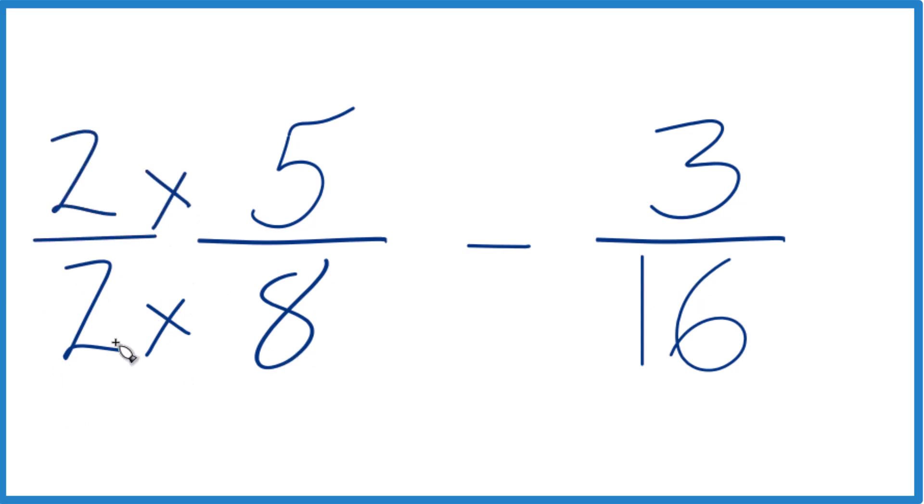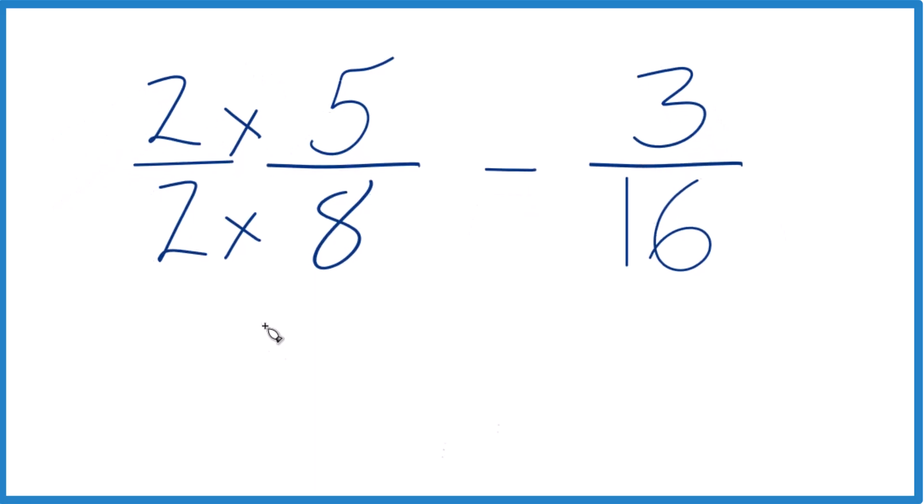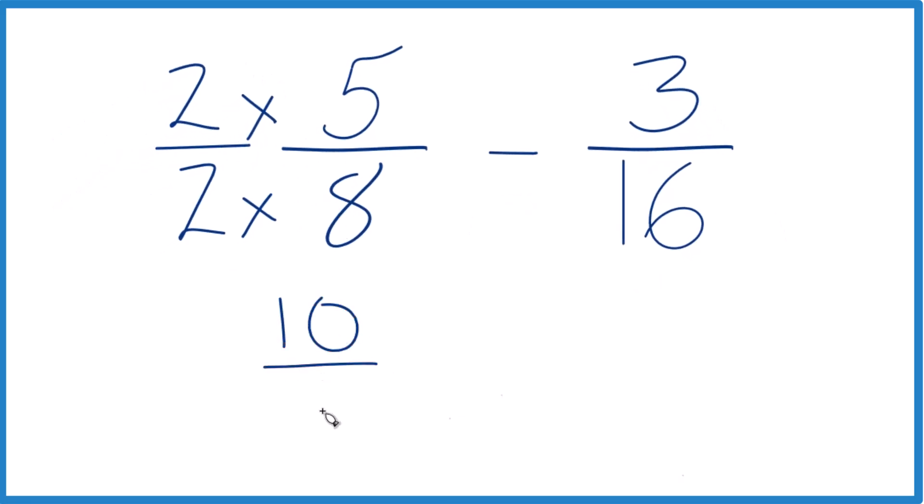Because 2 over 2, that's 1. So 1 times 5 eighths, it's still 5 eighths. But now we have 2 times 5, that gives us 10. 2 times 8 gives us 16. So now we have that 16.